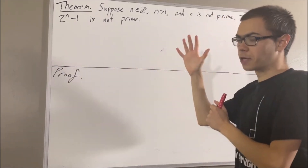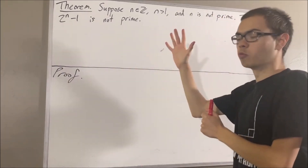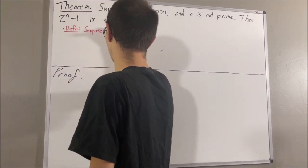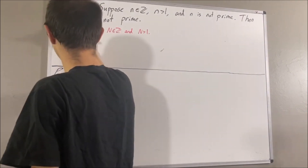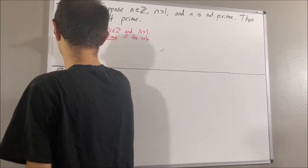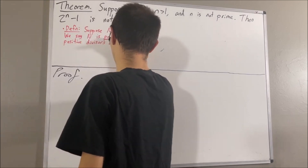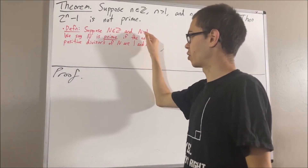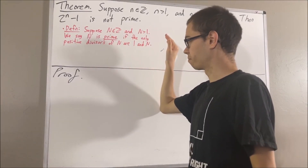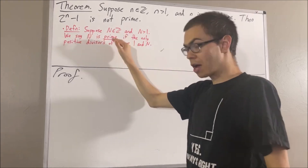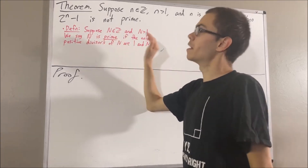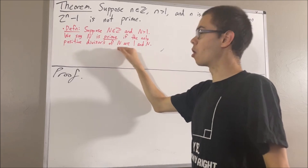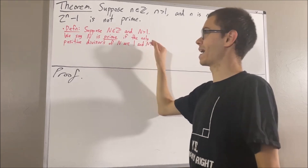Now, our definition of a prime number will be as follows. Suppose n is an integer and n is greater than 1. We say n is prime if the only positive divisors of n are 1 and n.